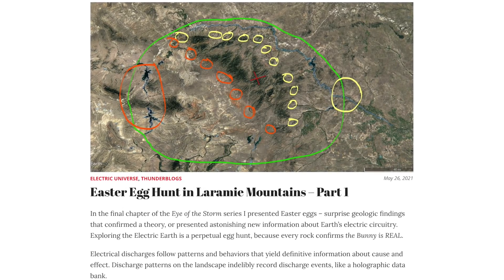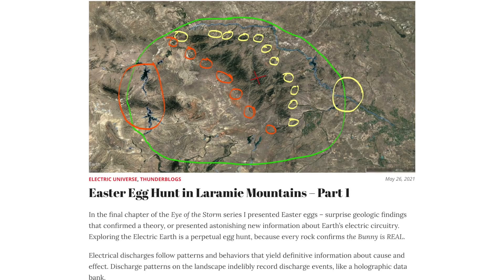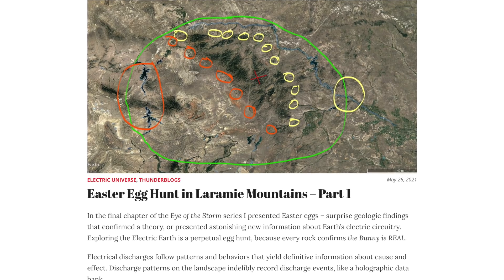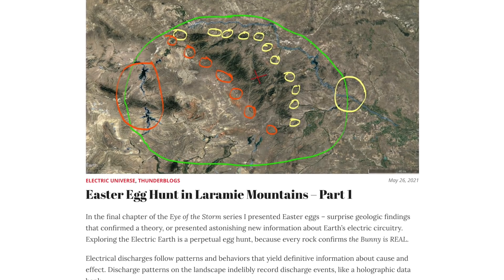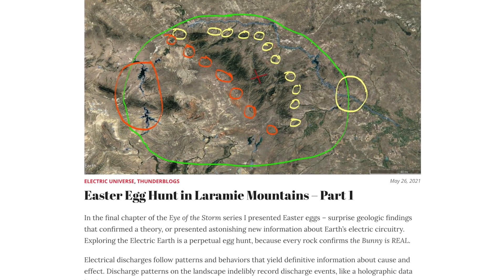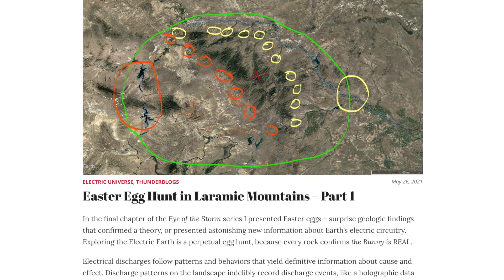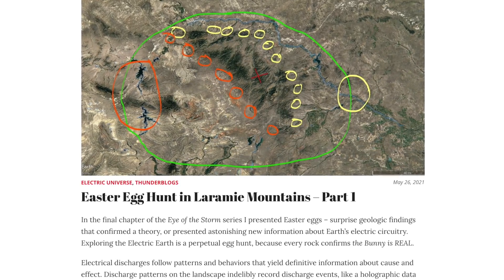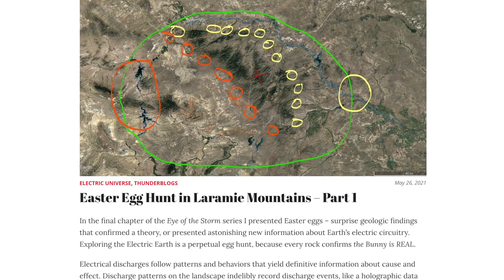In my last presentation, Easter Egg Hunt in the Laramie Mountains, we covered the near-perfect cross of canyons made by two out-of-phase circuits coming together. This time in the cross from Laramie, we'll look at the wind-cut valleys around the cross that resulted from induced winds.